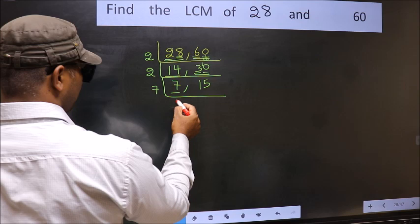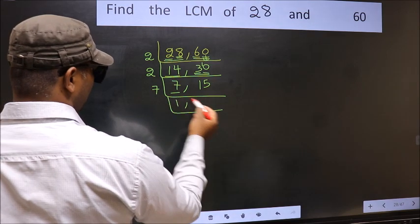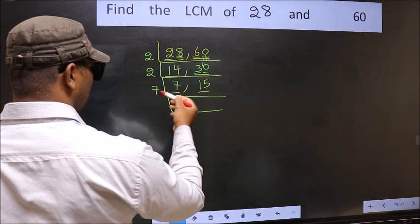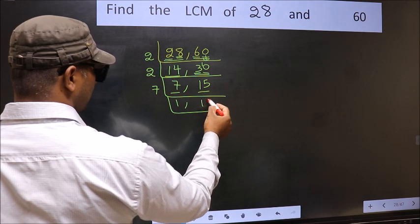7 is a prime number so 7×1, 7. The other number 15, not divisible by 7 so we write it down as it is.